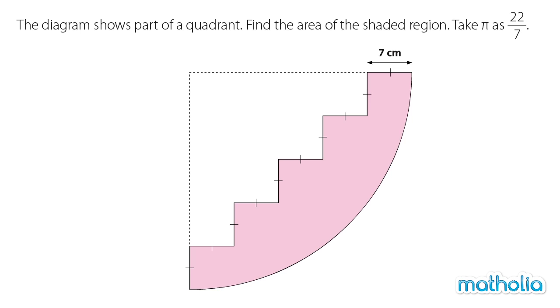The horizontal and vertical lines of the shaded region are all 7 cm long. We can see that the radius of the quadrant has a length of 5 such lines. So the radius of this quadrant is 35 cm.